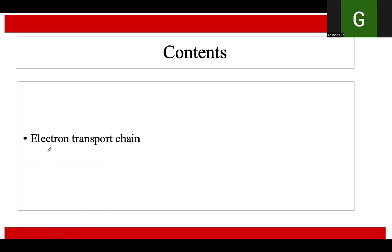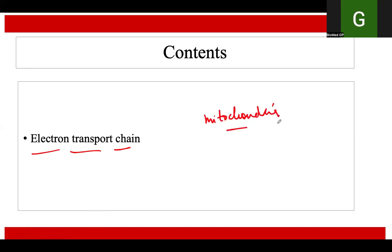Hello, everyone. In this lesson, we are going to understand the concept of electron transport chain, which is one of the crucial processes in cellular respiration, and this takes place in mitochondria. This is the final stage where most of the ATP, which is the energy currency of the cell, is produced.